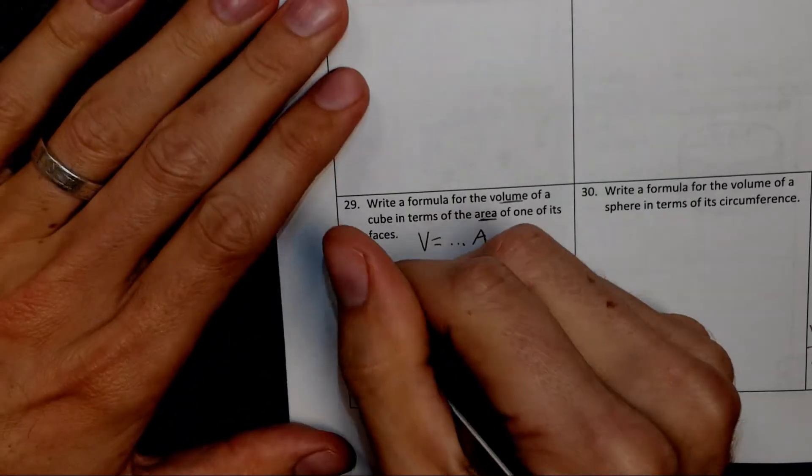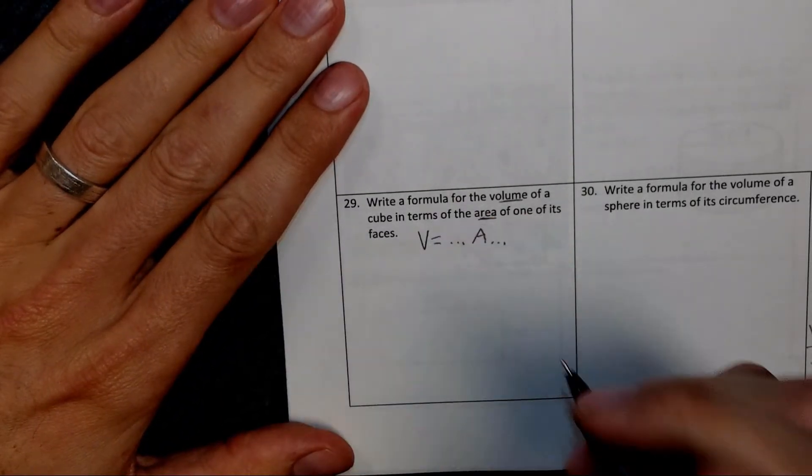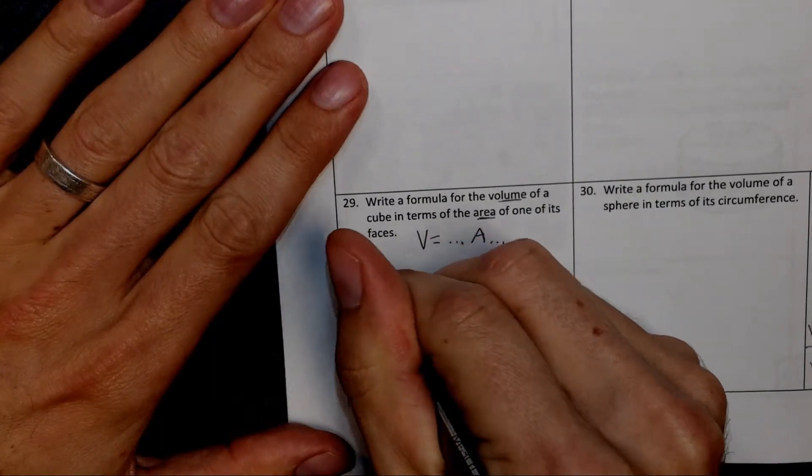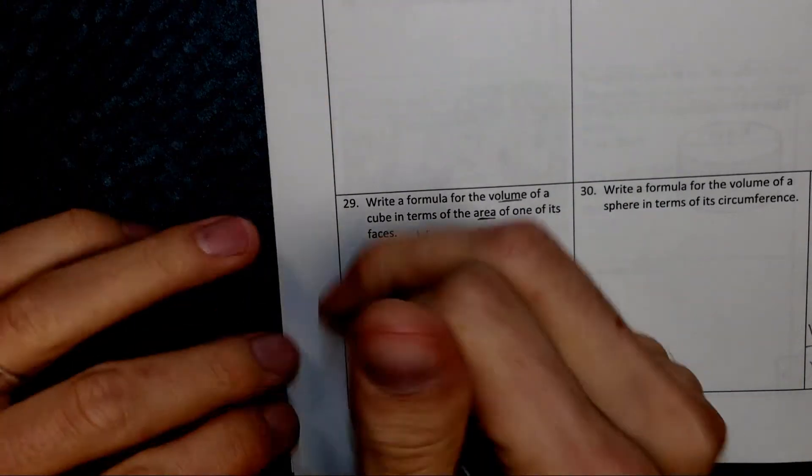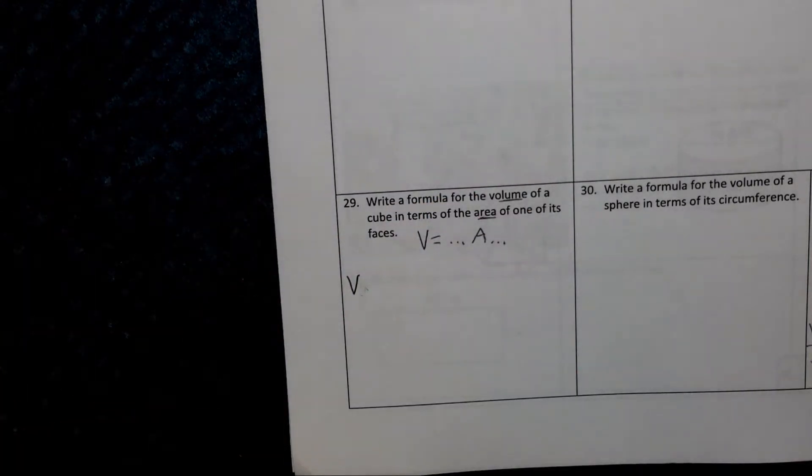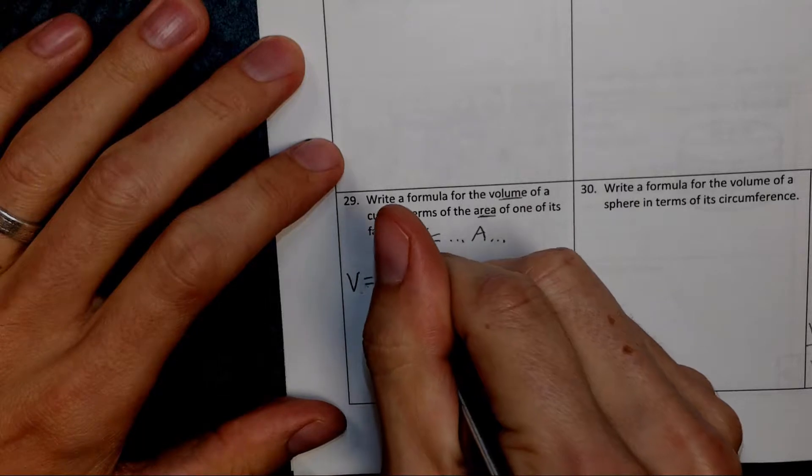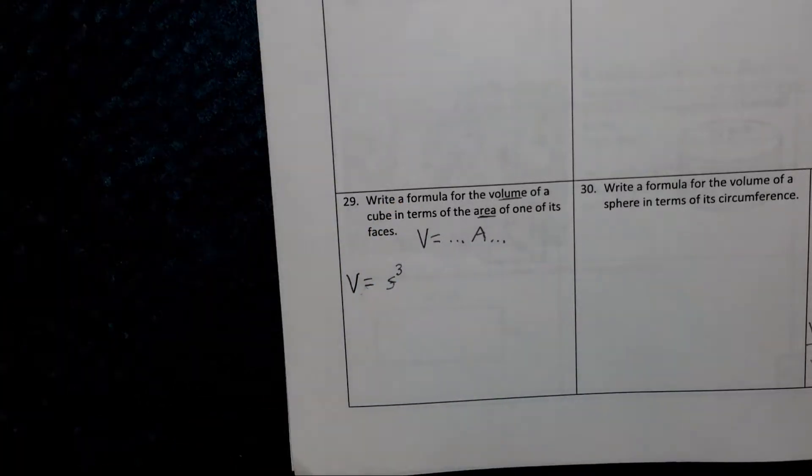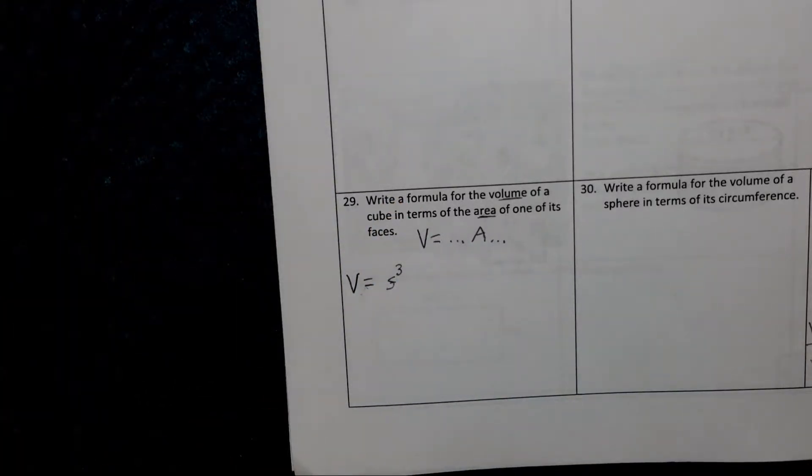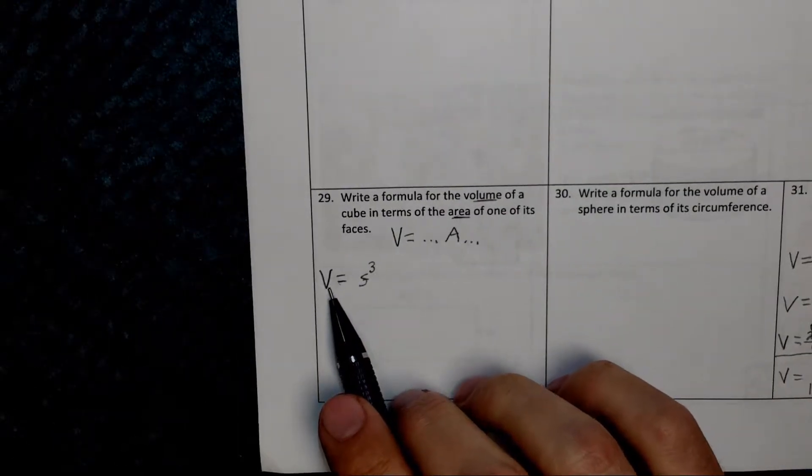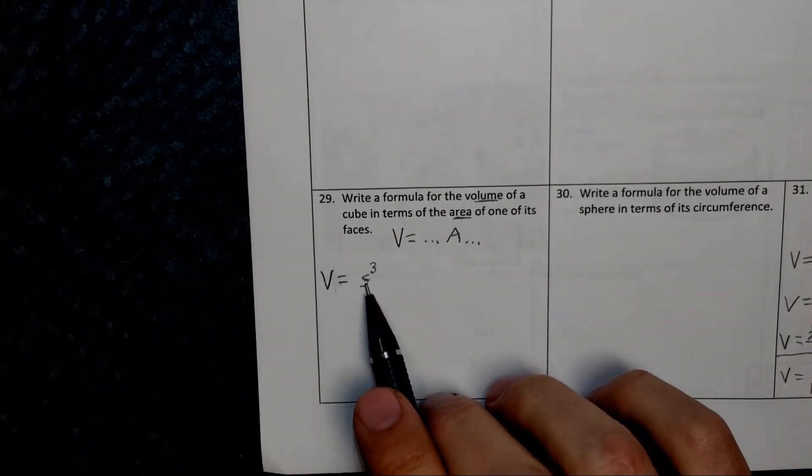Let's start off with our normal equation for the volume of a cube. V equals the side length squared. Sorry, cubed. It's a cube, the volume. Okay, great. That's the formula for the volume given in terms of the side length.